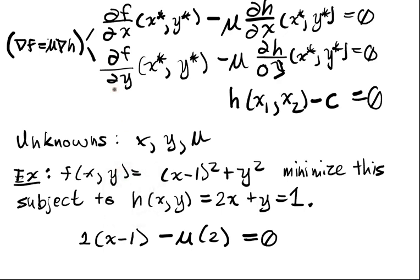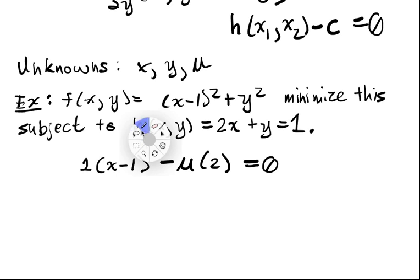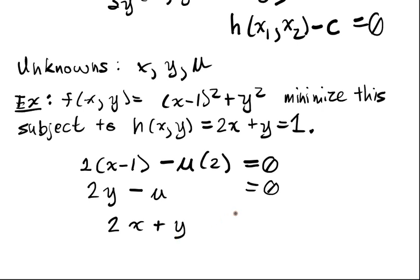Now the second one, I'm going to take derivatives with respect to y. So I get 2y. And then here I'll just have μ, so minus μ. And that's going to be equal to 0 as well. And then finally, I have to satisfy the constraint h. h(x, y) is equal to 1. So I've got 2x + y is equal to 1.